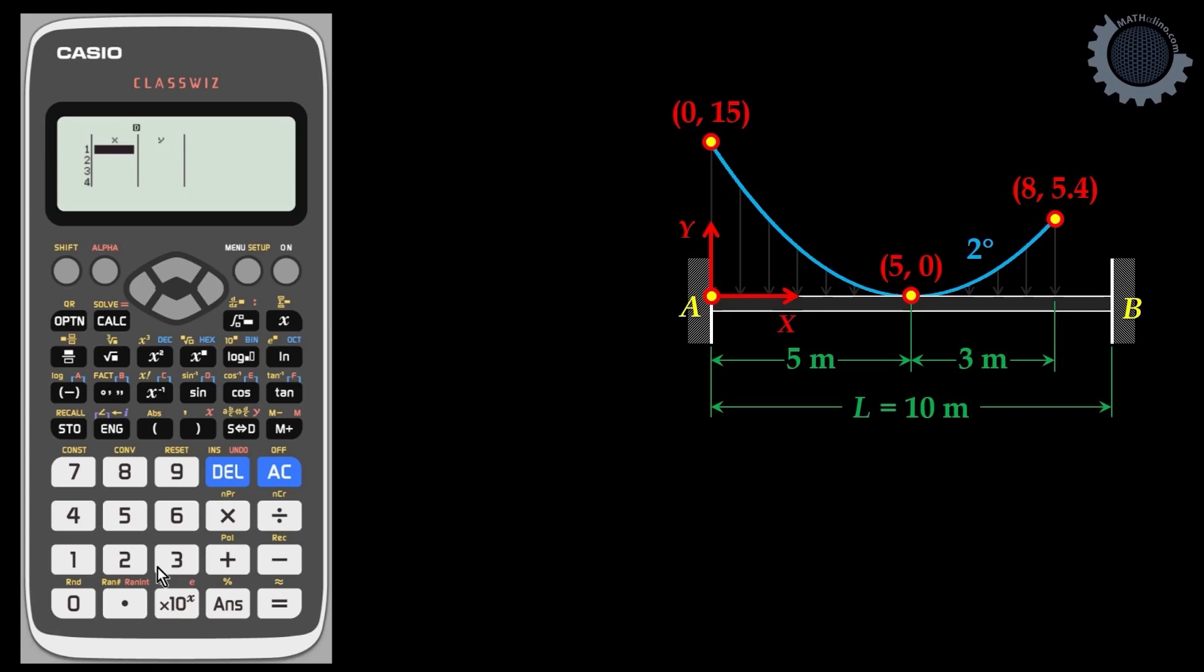Let's select number 3 for parabolic. Input the coordinates of our points: we have 0, 5, 8. For the Y coordinates, navigate upward: 15, 0, 5.4.